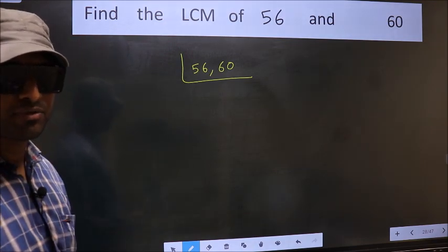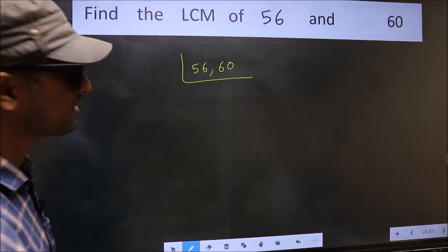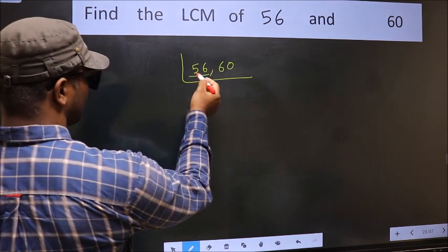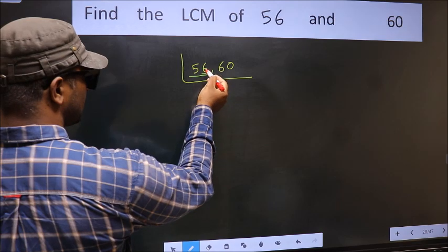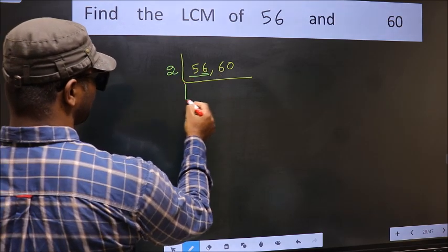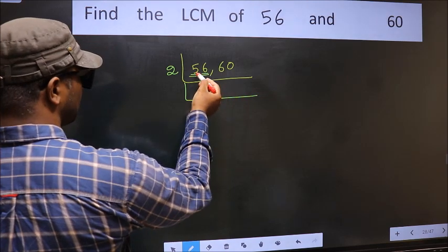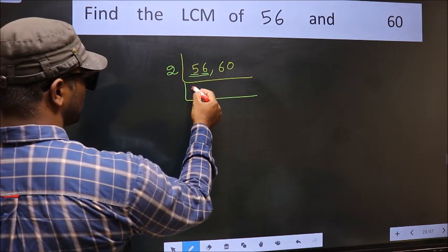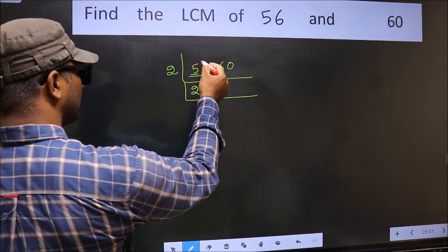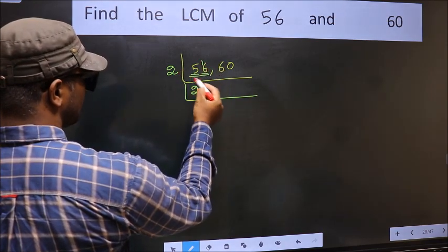Now you should focus on the first number, which is 56. For this number, last digit is 6 — A1 — so take 2. First number is 5. A number close to 5 in the 2 table is 2, 2 is 4. 5 minus 4 is 1; 1 carried forward gives 16. When do we get 16 in the 2 table? 2, 8 is 16.